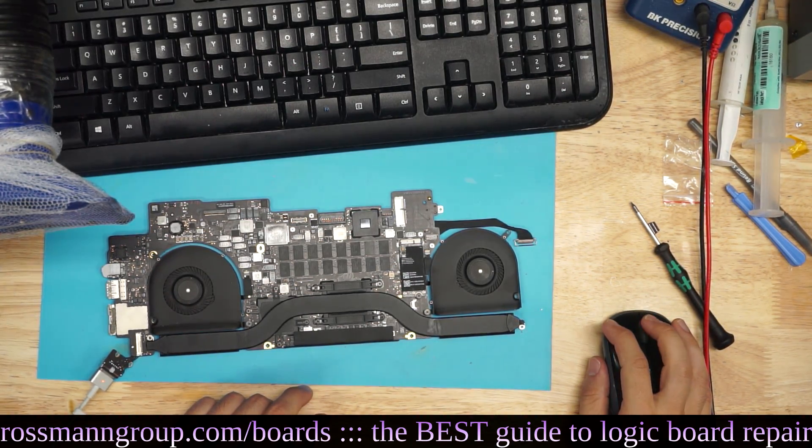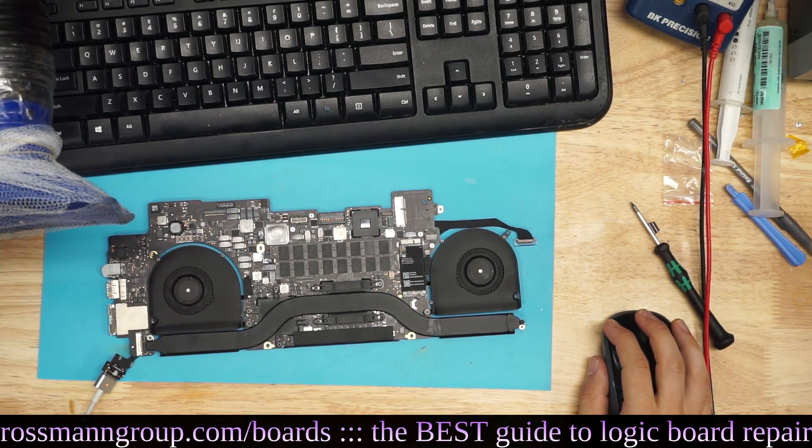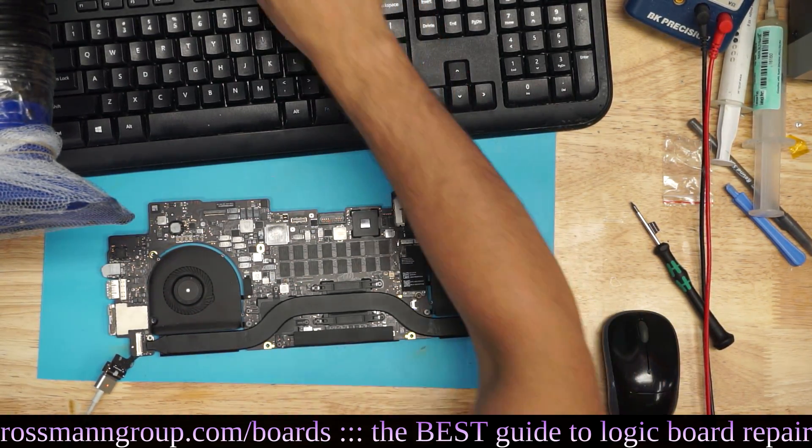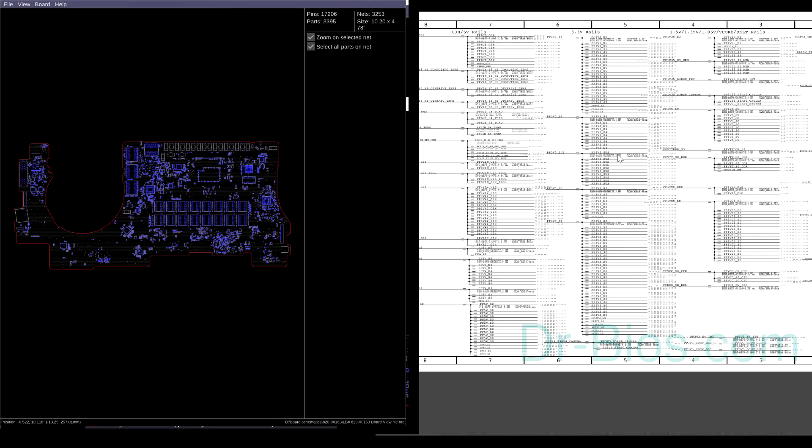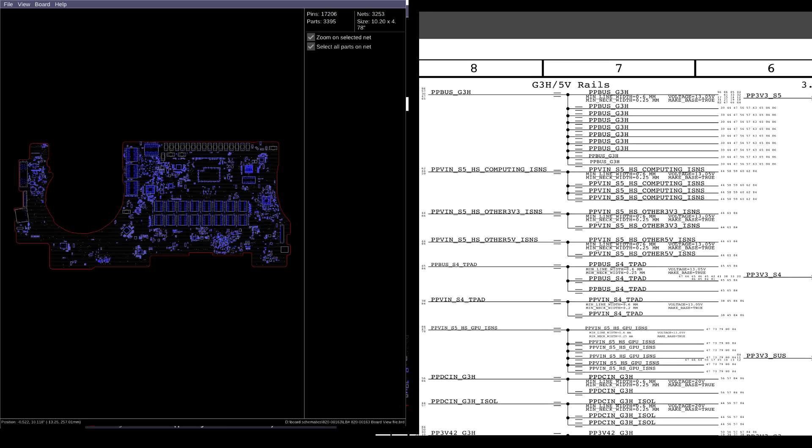So what we're going to do is figure out why it's not turning on by going to the page that lists the power rails. And on this MacBook, they don't list it in the beginning of the schematic anymore like they used to. They list it in the most intuitive page that you can possibly imagine, which is page 84. As you can see, on page 84 of the schematic, we get the power rails. And the first power rail here is PP bus G3 hot.